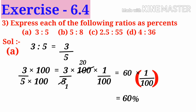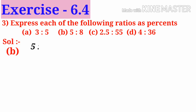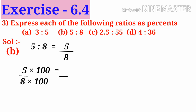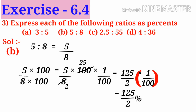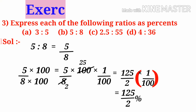B: 5 is to 8 can be written as 5 by 8. Now multiply both numerator and denominator of 5 by 8 with 100, that is 5 by 8 into 100 into 1 by 100. On simplification by 4, we get 5 into 25 is 125 by 2 into 1 by 100. Since 1 by 100 is replaced by the percent symbol, the answer is 125 by 2 percent.